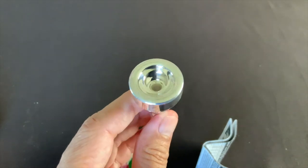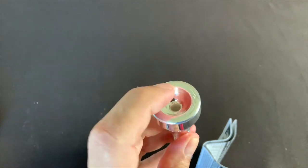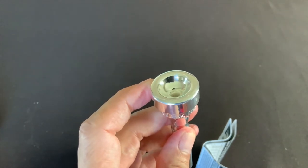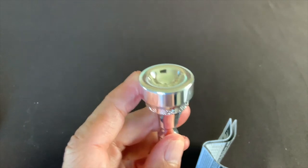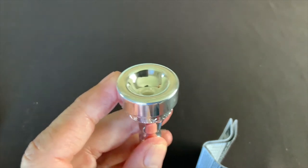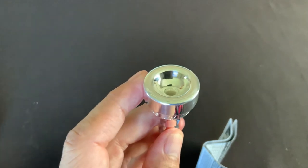So this 4E has a cup diameter, this dimension here, of 16.5 millimeters. And it has what they call their shallowest cup. And as you look at it, yeah, it's pretty darn shallow.